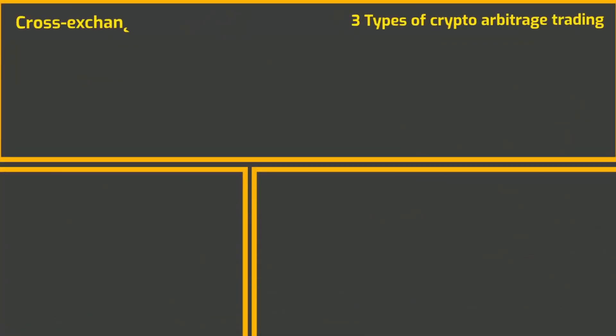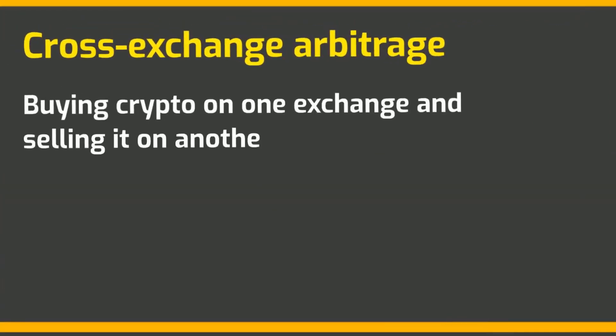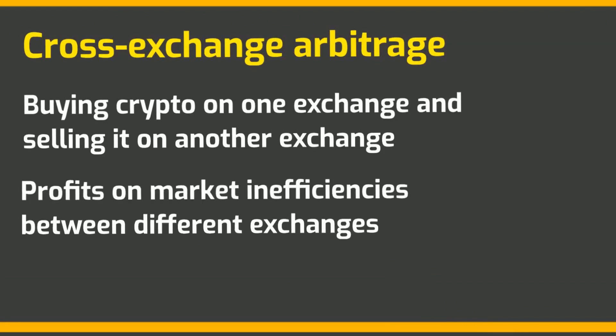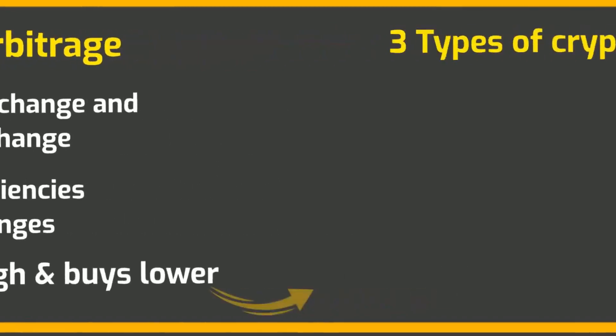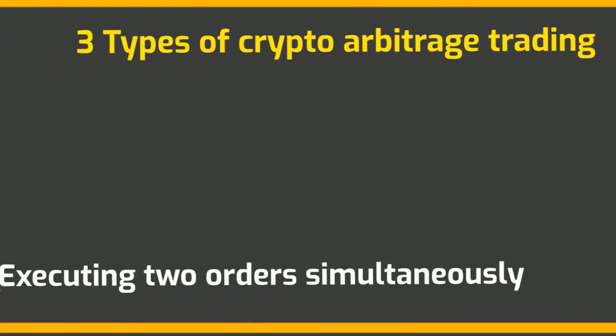There are mainly three types of crypto arbitrage trading. Cross-exchange arbitrage: this is the basic form of arbitrage trading where a trader tries to generate profit by buying crypto on one exchange and selling it on another exchange. It is a kind of arbitrage trading where your bot makes profit on market inefficiencies between different exchanges. This means that the crypto arbitrage bot sells high on one exchange and buys lower on the other, executing two orders simultaneously.